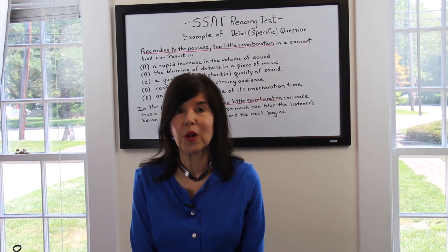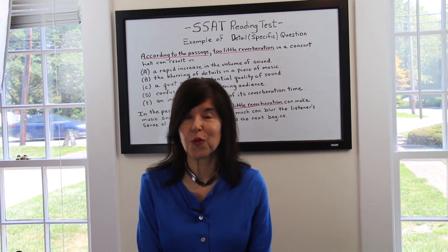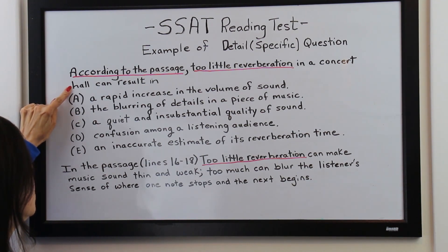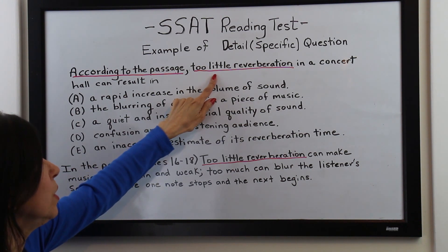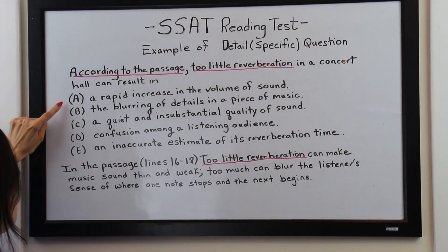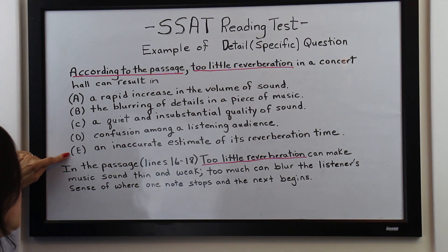Now I'm going to show you an actual example of an SSAT reading test detail question and how the strategies can work for you. The question is: according to the passage, too little reverberation in a concert hall can result in? 'According to the passage' is a clue that it's a detail or specific question, and 'too little reverberation' are the lead words. Here are the choices: A) a rapid increase in the volume of sound; B) the blurring of details in a piece of music; C) a quiet and insubstantial quality of sound; D) confusion among a listening audience; E) an inaccurate estimate of its reverberation time.